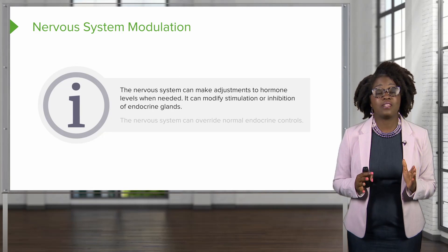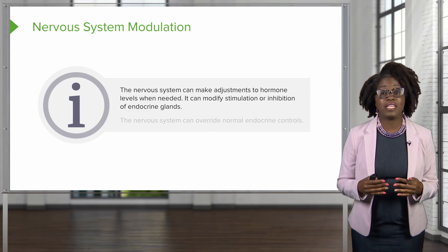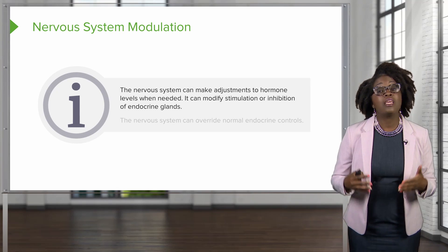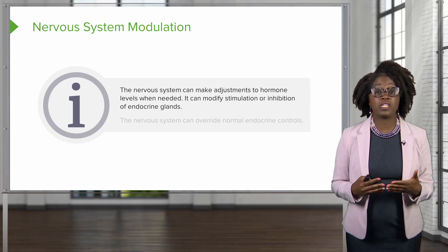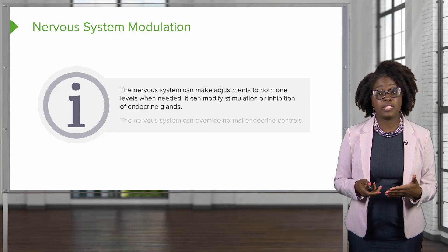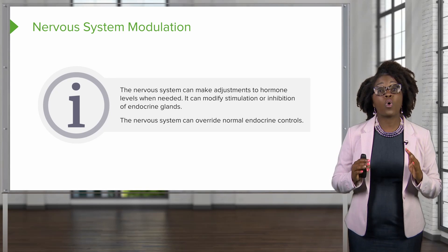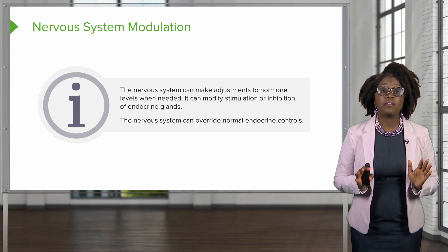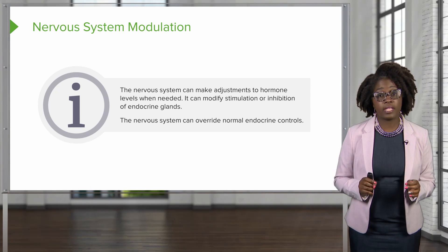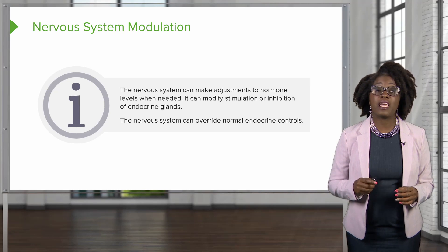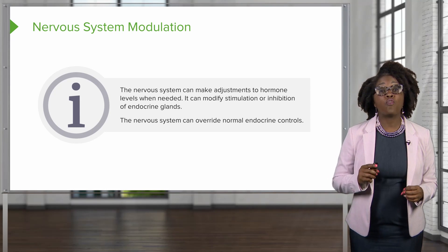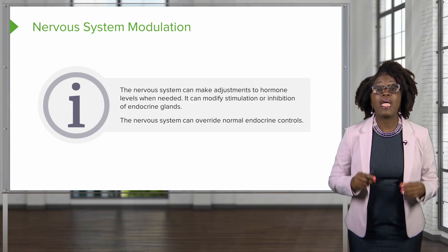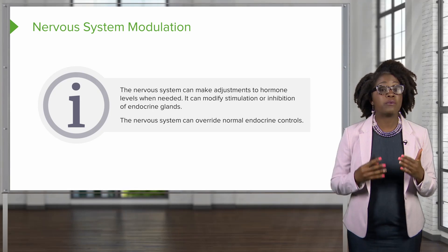The nervous system can make adjustments to hormone levels when needed. This is referred to as nervous system modulation. It can modify stimulation or inhibition of certain endocrine glands. The nervous system can also override normal endocrine controls. An example of this is when you are under severe stress — the hypothalamus and your sympathetic nervous system can override the insulin from the pancreas to allow blood glucose levels to increase and prepare your body for the fight or flight response.